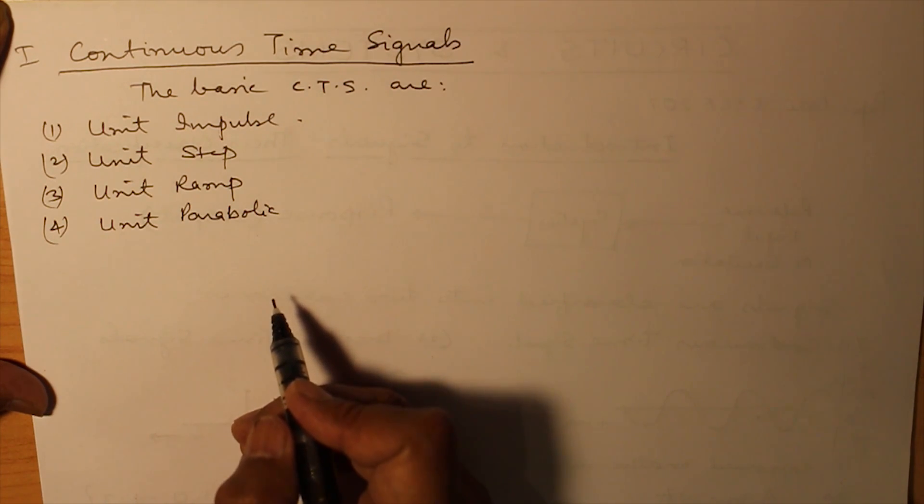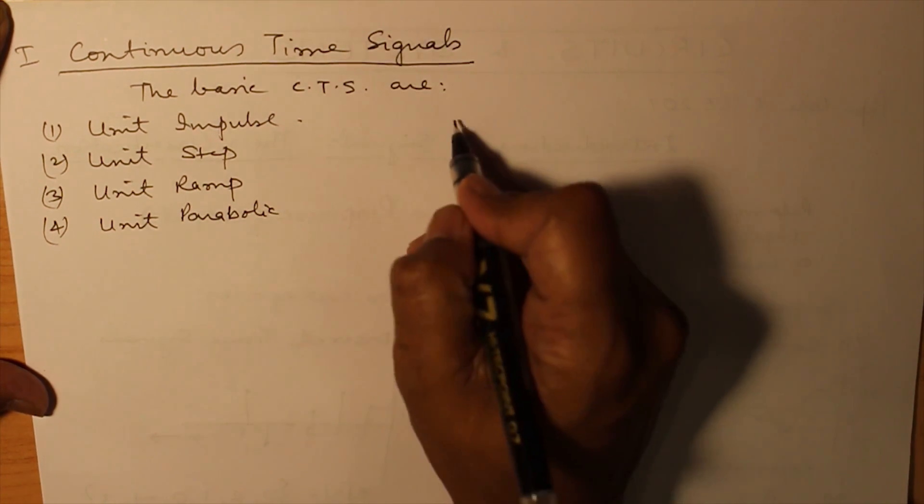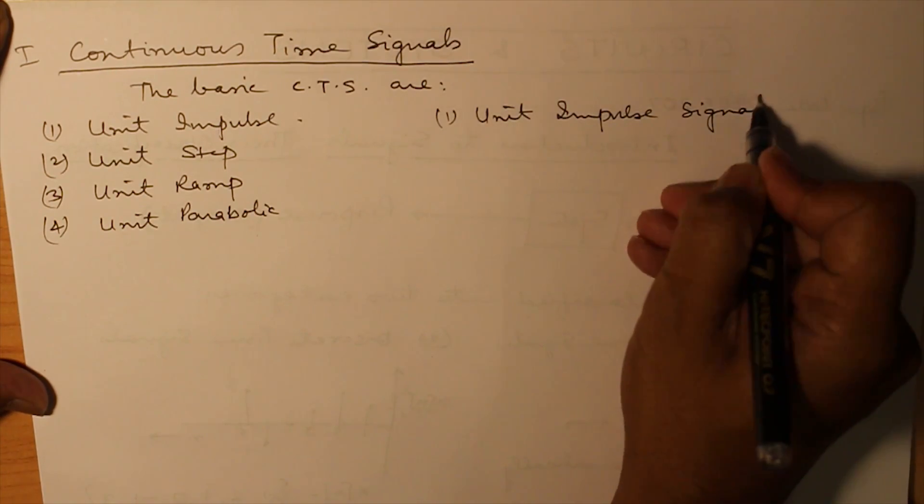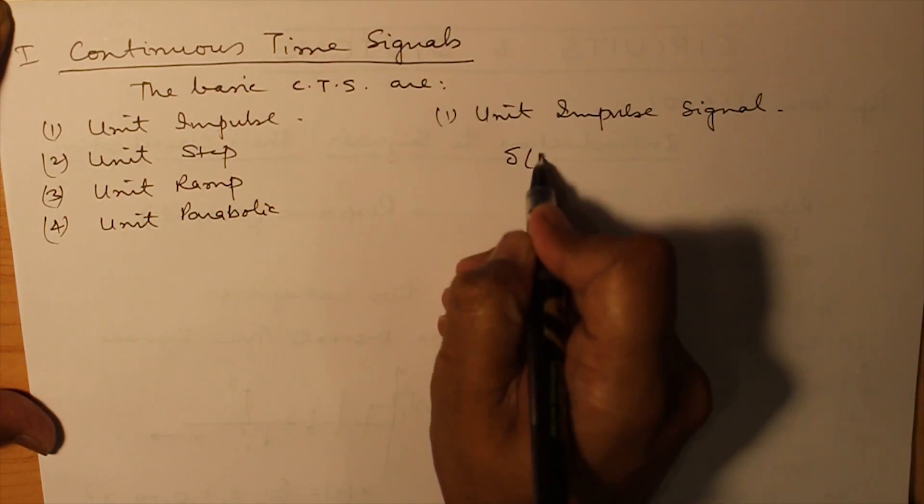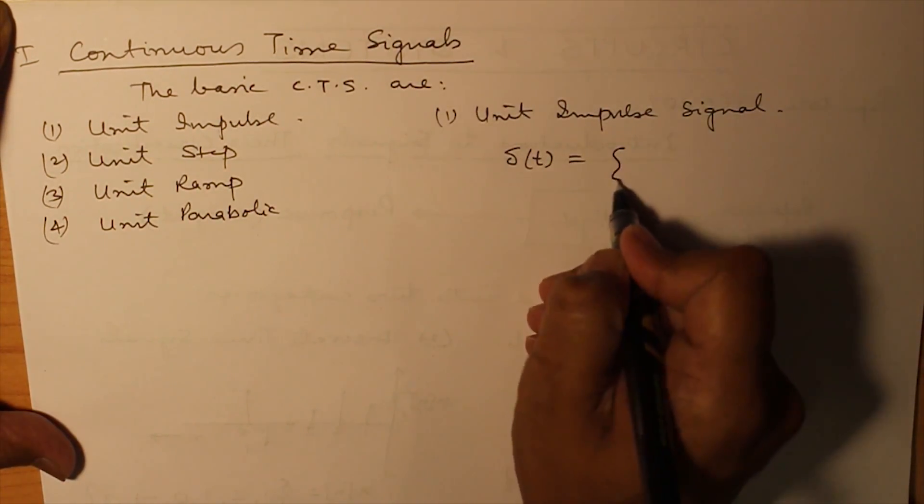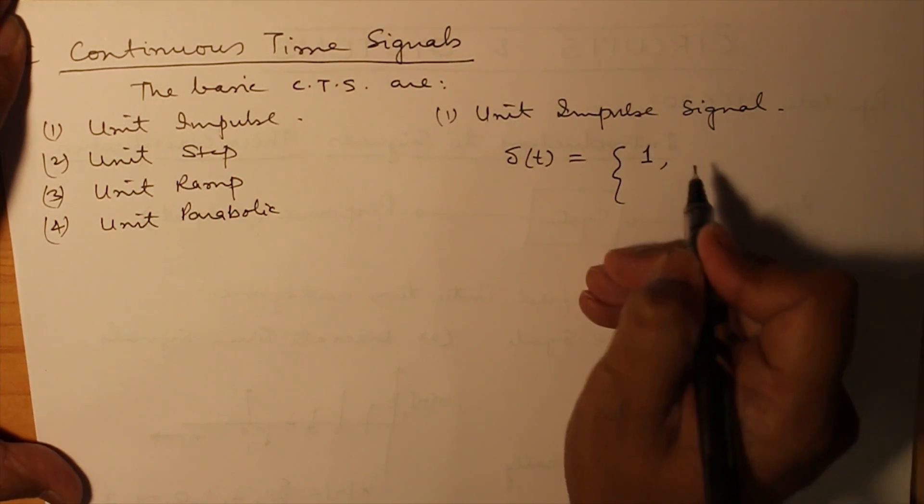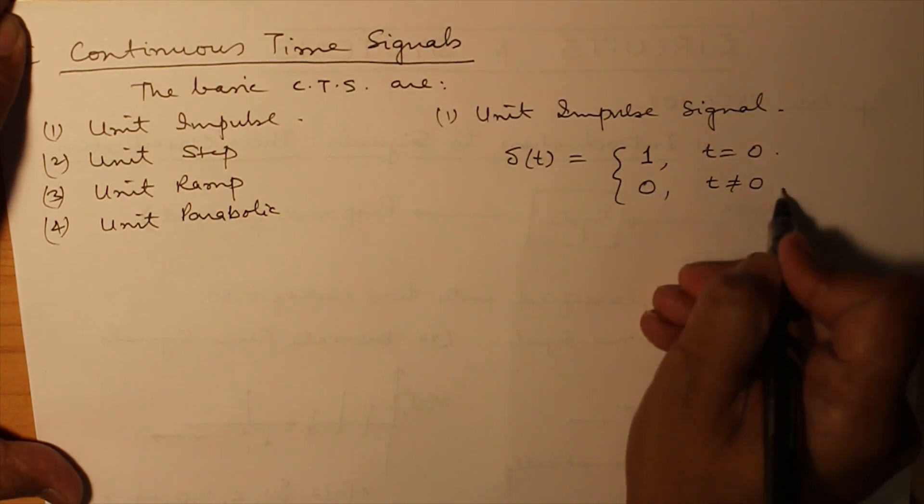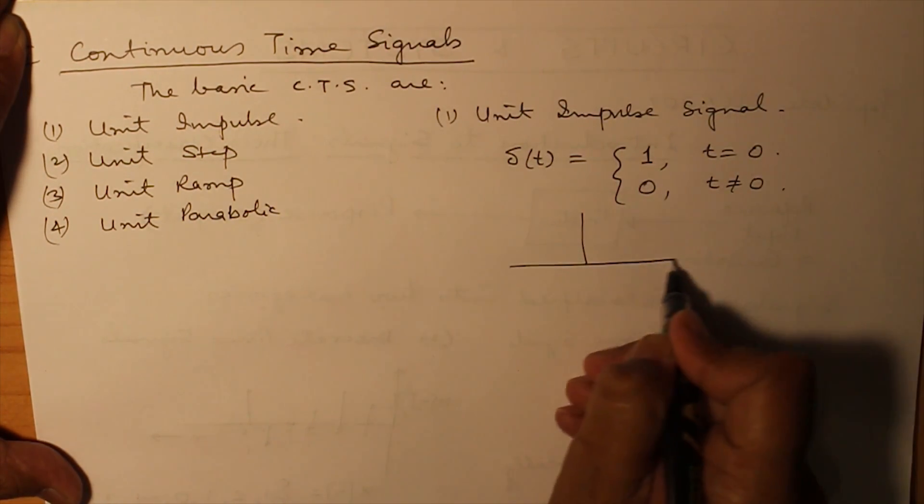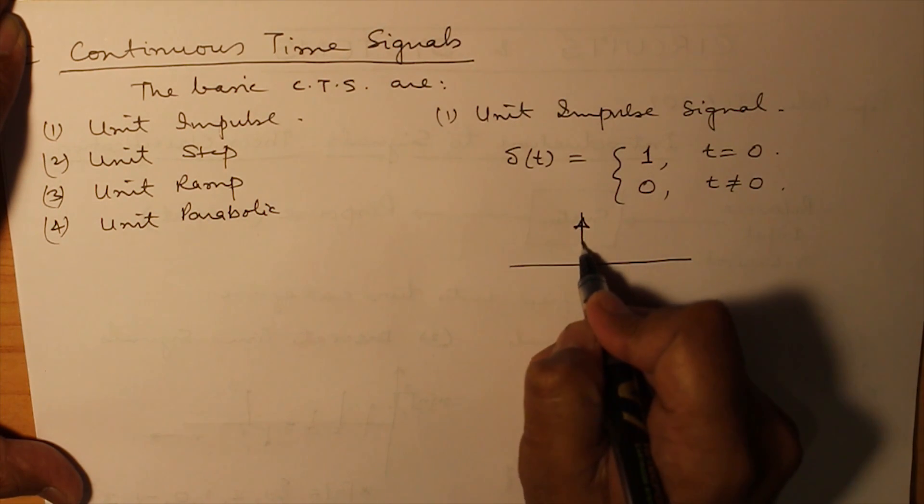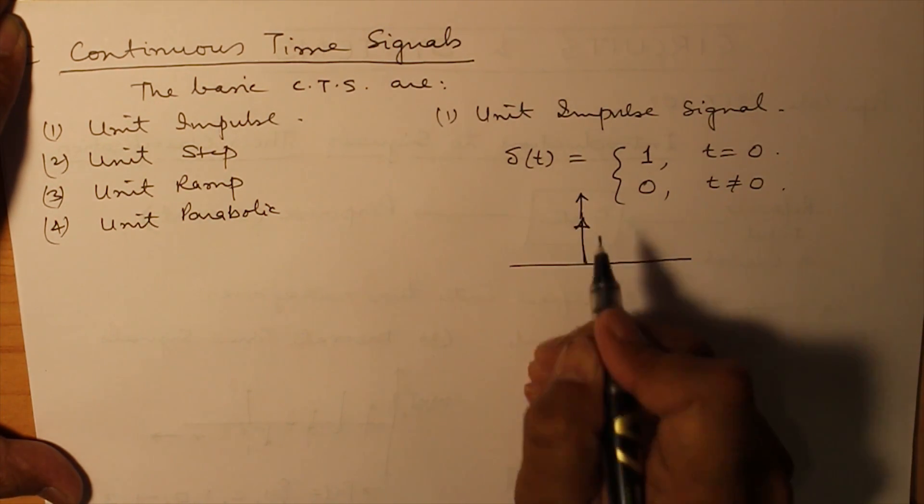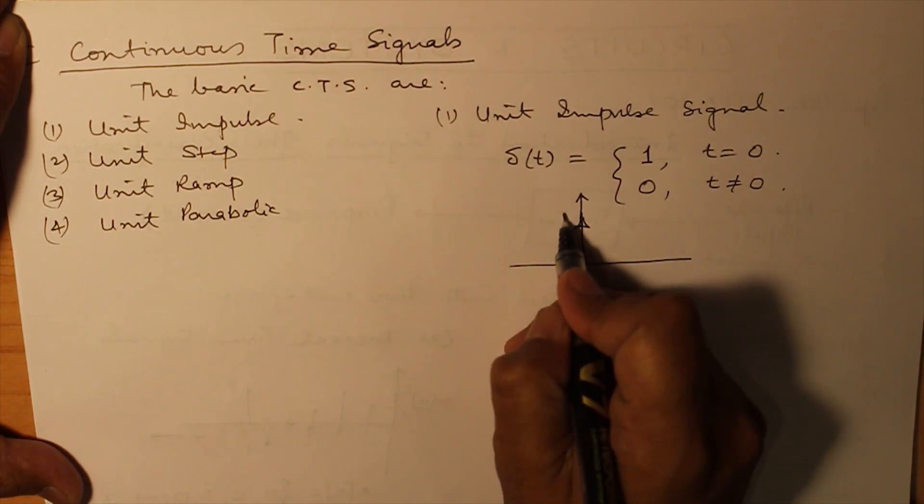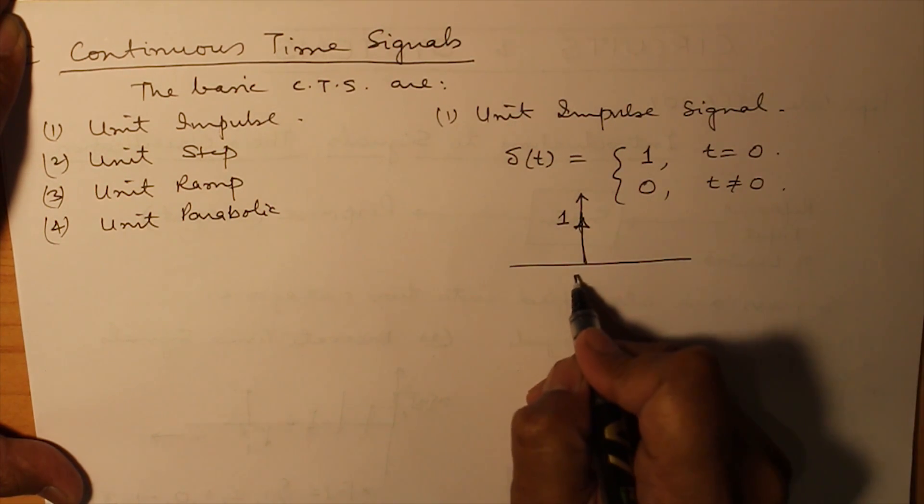First of all, let us do what is a unit impulse signal. It is denoted by delta t and is represented as the value 1 for t is equal to 0 and 0 elsewhere. You will find a representation of delta t as, this is the y-axis, value 1 is written here at t is equal to 0.